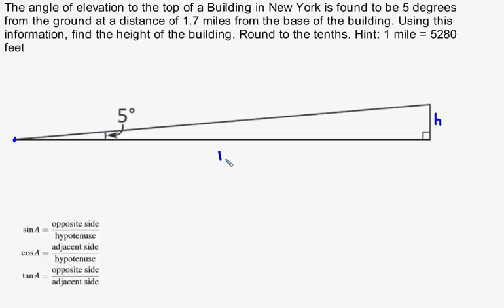So if I look at what is given in the problem, in terms of my angle 5 degrees, we have the side opposite the angle, and we have the adjacent side. And this would be the hypotenuse here, the side opposite the 90-degree angle.